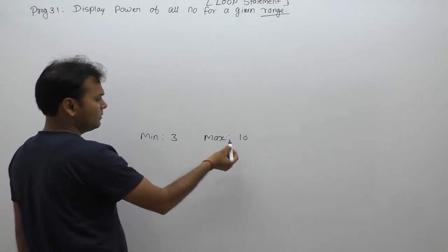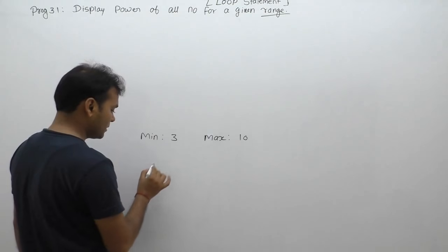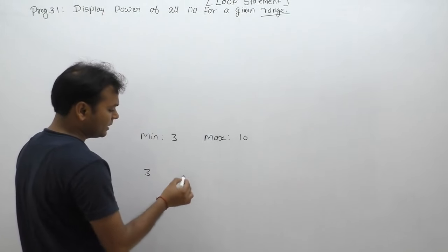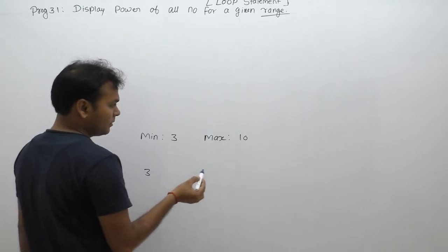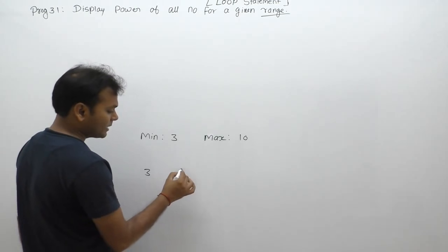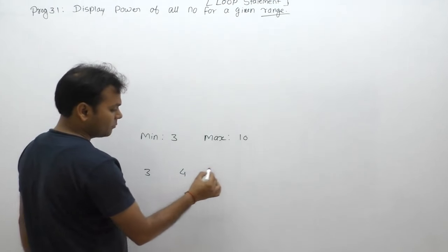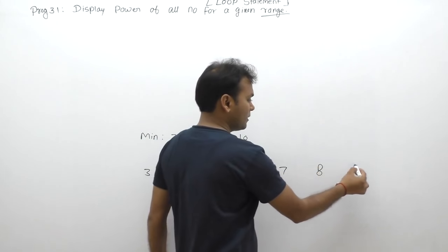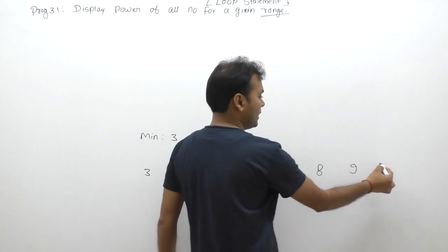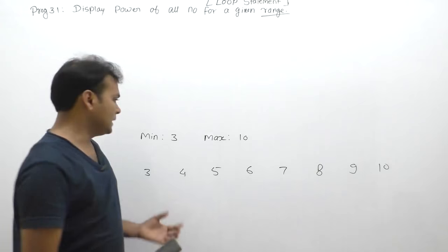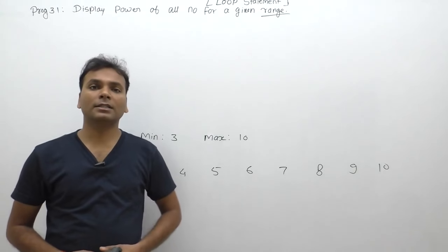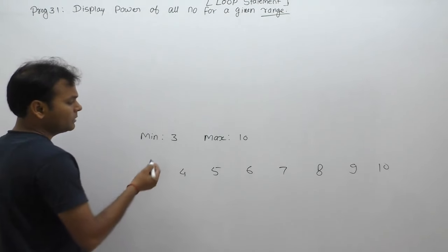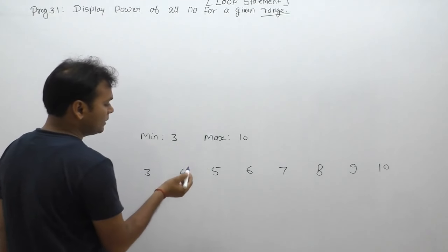On a range basis, we generate numbers. The first number is 3; range means starting from minimum up to maximum, so: 3, 4, 5, 6, 7, 8, 9, and 10. Here, 3 is the minimum range and 10 is the maximum range.